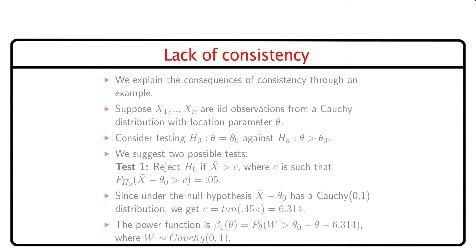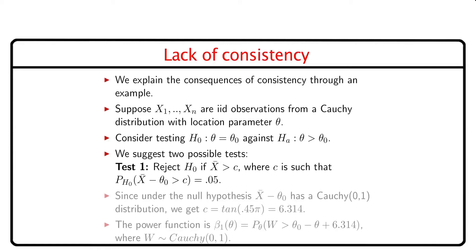We have discussed consistency and sufficient conditions for consistency. It will be interesting to know the consequence of lack of consistency, which we explain through an example. Suppose x1, x2, ..., xn are iid observations from a Cauchy distribution with location parameter θ. Consider testing θ = θ₀ against the alternative θ > θ₀. Test 1 rejects the null hypothesis if the observed value of x̄ − θ₀ exceeds c, where c is determined such that the test has size 0.05. Since under the null hypothesis x̄ − θ₀ has a standard Cauchy distribution, we get c = 6.314. The power function is β₁(θ) = P(W > θ₀ − θ + 6.314) where W has a Cauchy distribution.